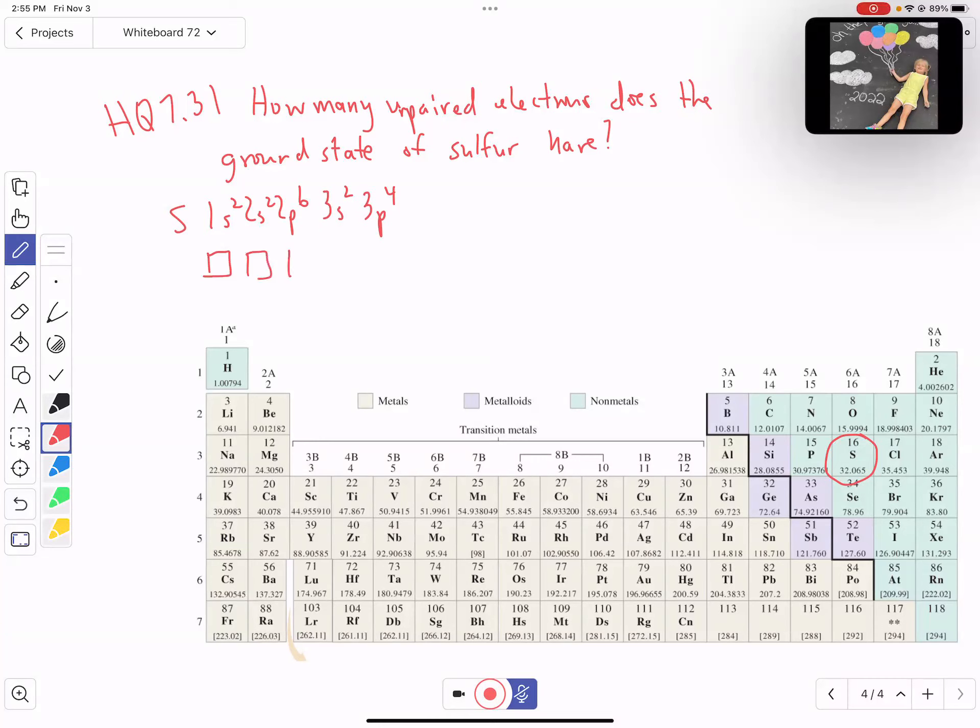alright, there's our 1s, there's our 2s, there's 2p, there's 3s, and then there's 3p. Alright. So here's 1s, 2s, 2p, 3s, 3p.